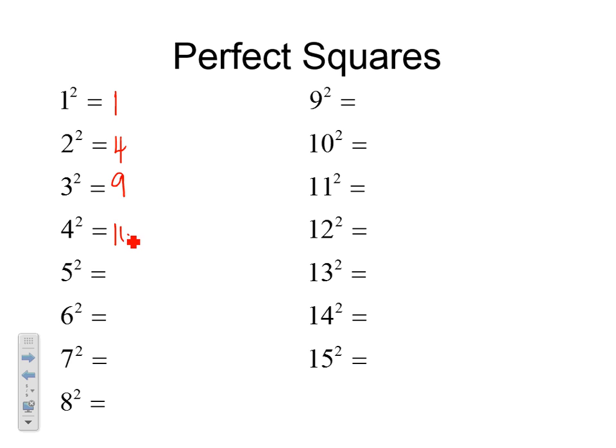4 times 4 is 16. 25. 6 squared is 36. 7 squared is 49. 8 squared is 64. 9 squared is 81. 10 squared is 100.